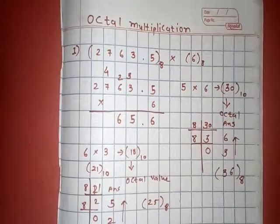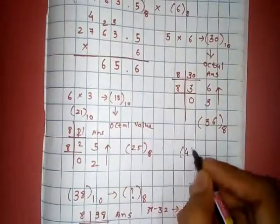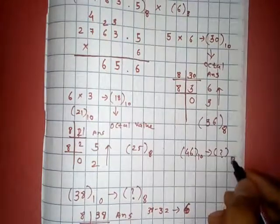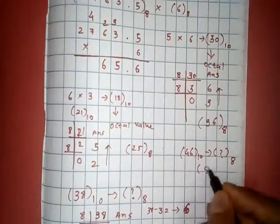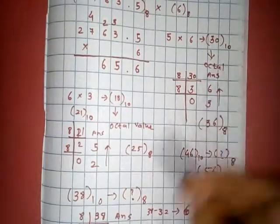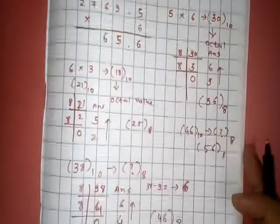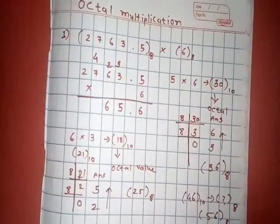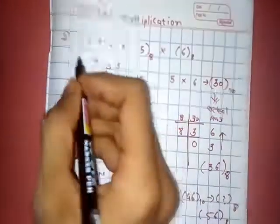Now we must convert 46 from decimal to octal and that value is 56. That I have already done so we use this value directly. You can use this concept also. I have already explained it three times. This is 56 and this is 6 and this is 5.